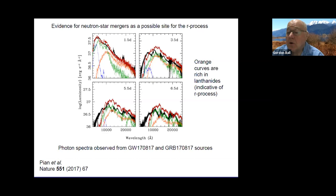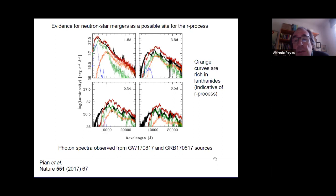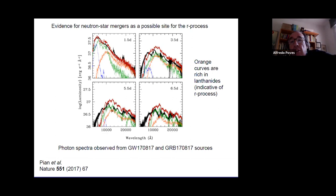Alfredo asks: There was a theoretical prediction of the light curve published in Monthly Notices of the Royal Astronomical Society around 2010 - by researchers including Martinez-Pinedo - where the predicted light curve really fits the experimental data from the neutron star merger. This was seven years before the observation. What is your opinion on this prediction?